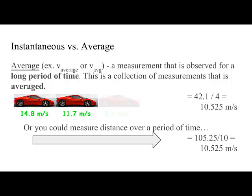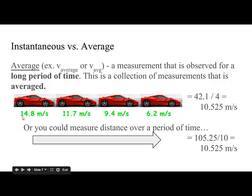If I'm in my Ferrari again, you can look at the very first example of my velocity, followed by the next example, and so on. At one point I'm traveling 14.8 meters per second, but then the next split second I'm traveling at 11.7, then 9.4, then 6.2. If I add all of these up, I get 42.1. Then I divide by 4 to average them, and I get an average speed of 10.525 meters per second. That's my average velocity.